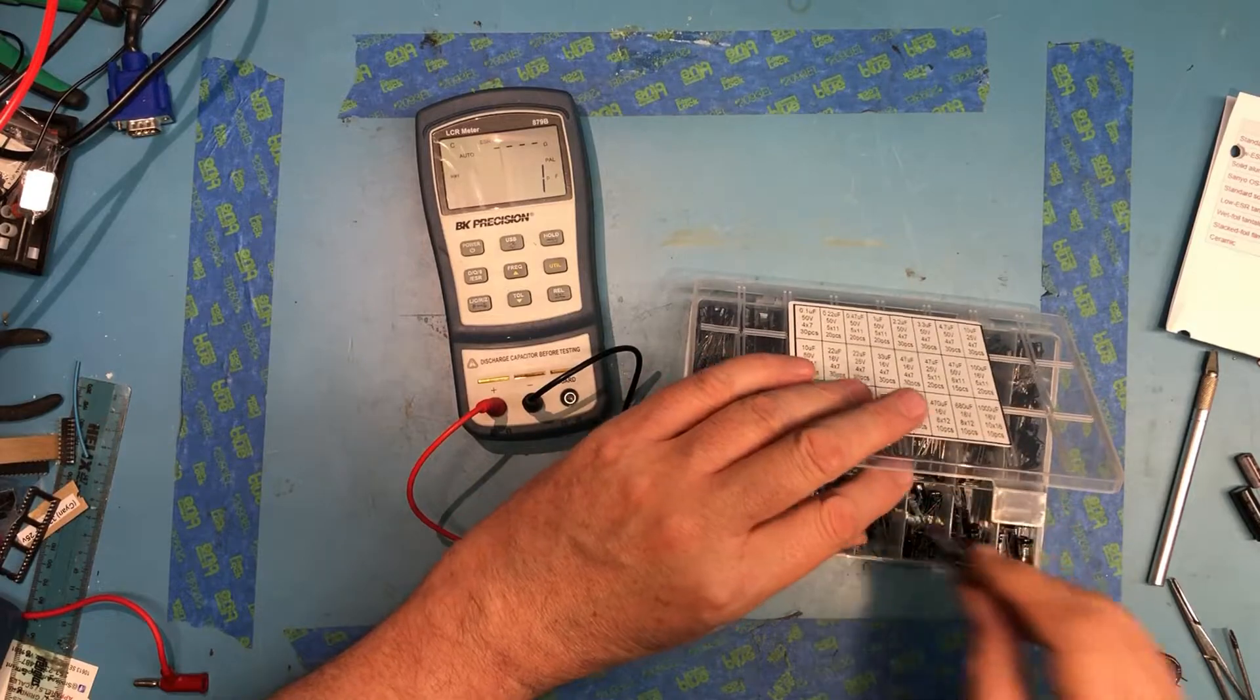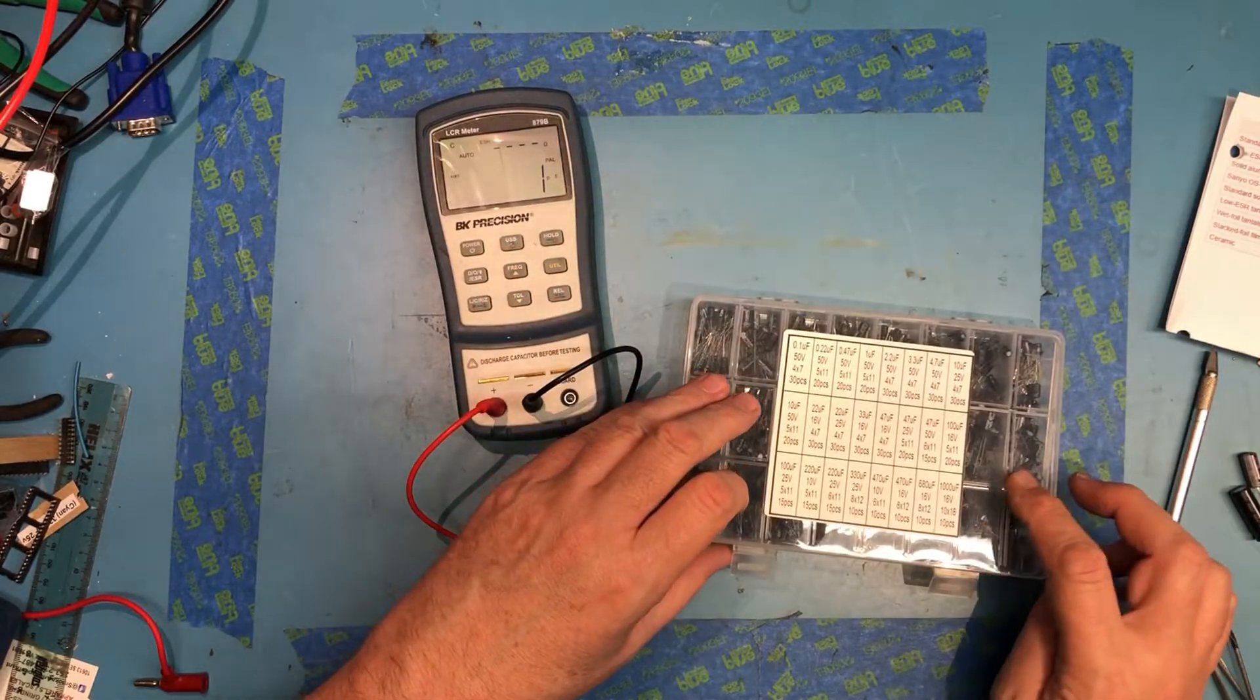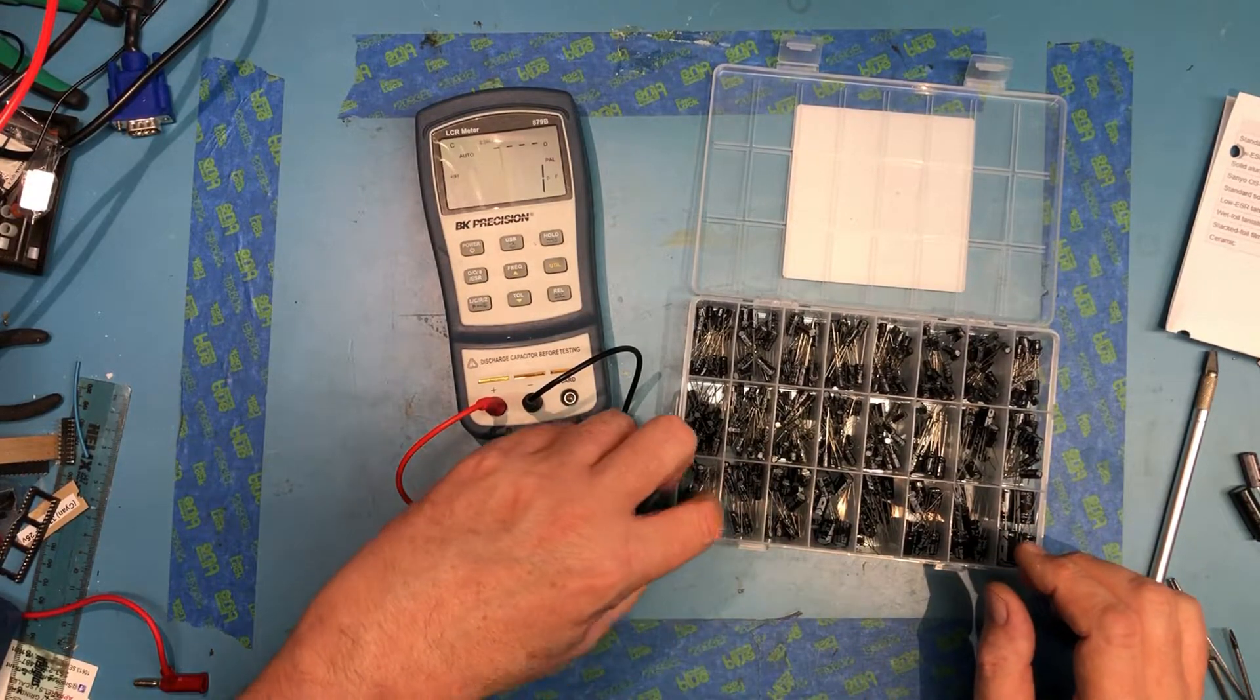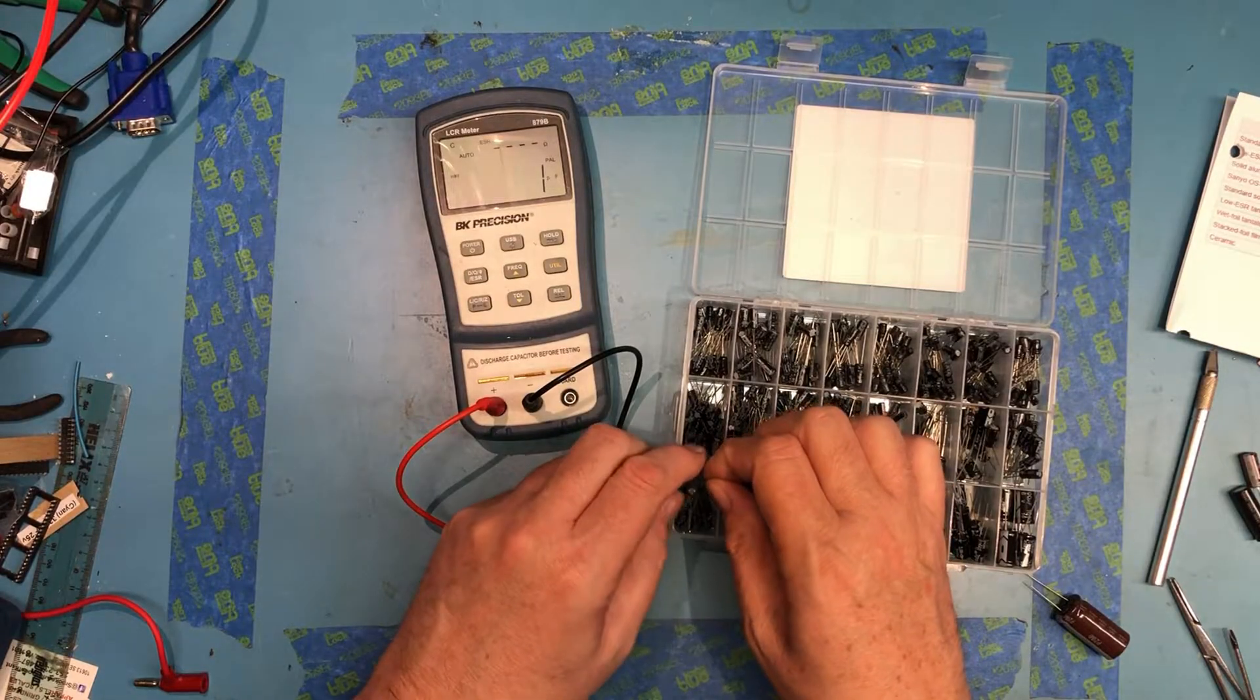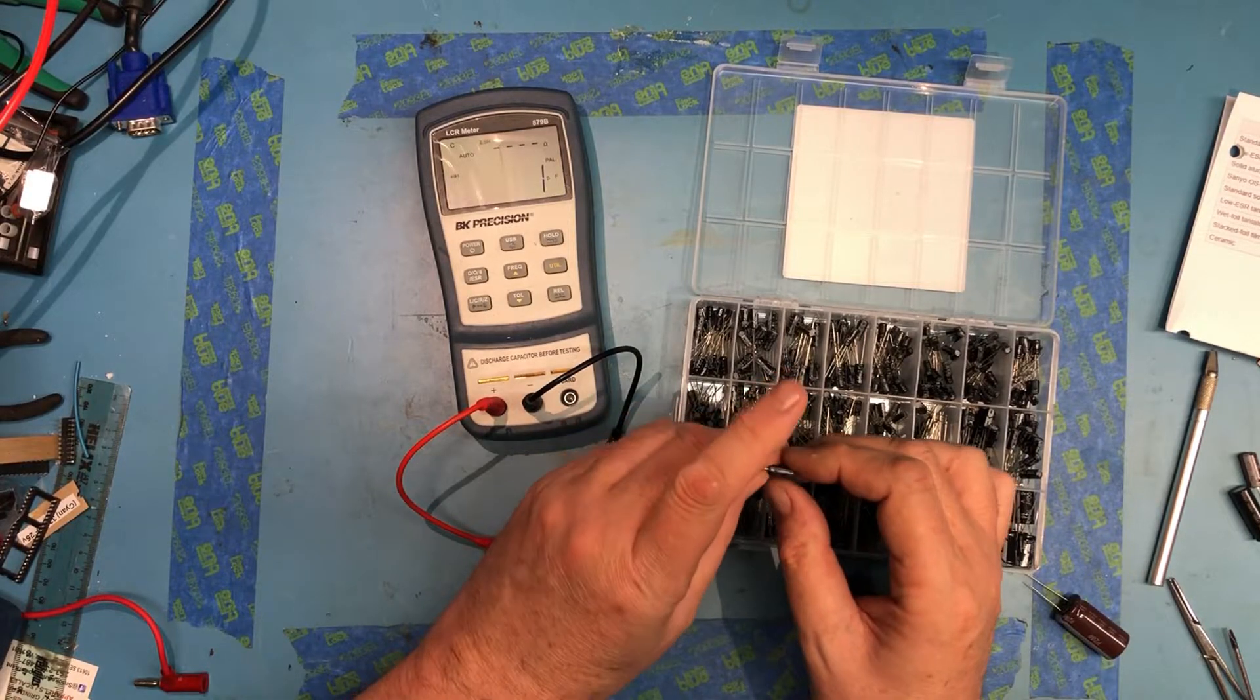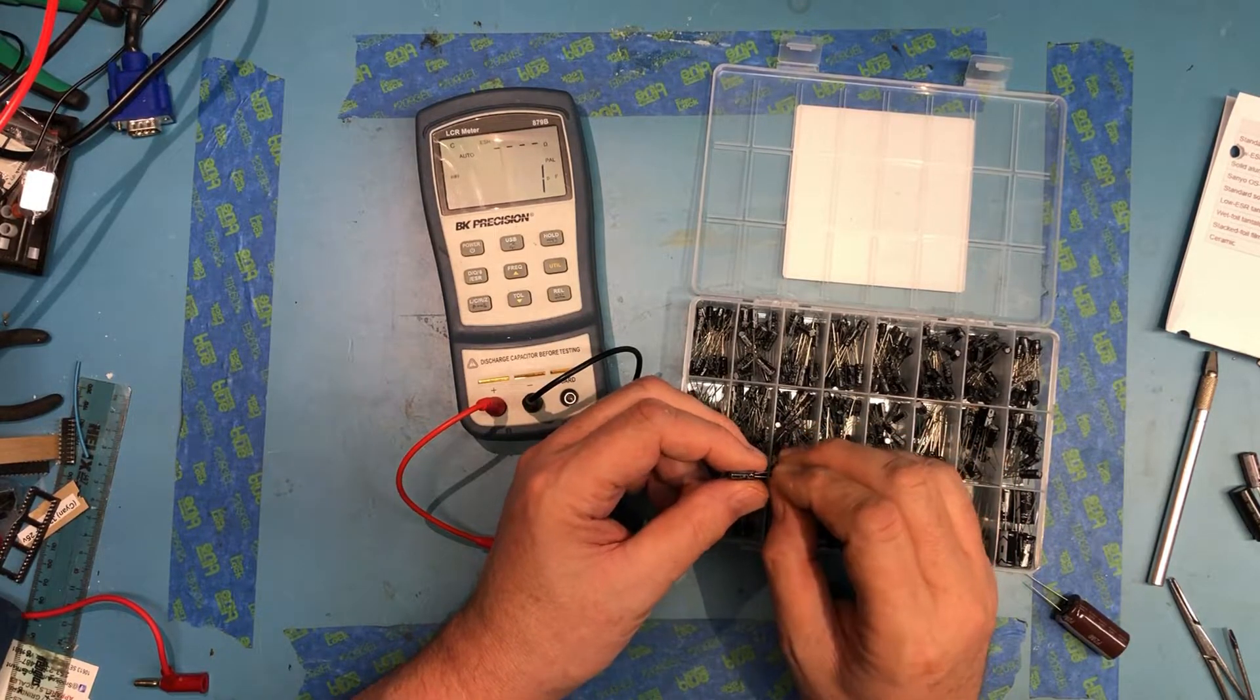Is that the Nichicon? Yeah, it is. I don't want to mix it in here. 100 microfarad, 25. 100 microfarad, 16. It's interesting, the 100 microfarad, 25s, and 16s, the 25 volts are actually a little bit smaller than the... Is that a different manufacturer?